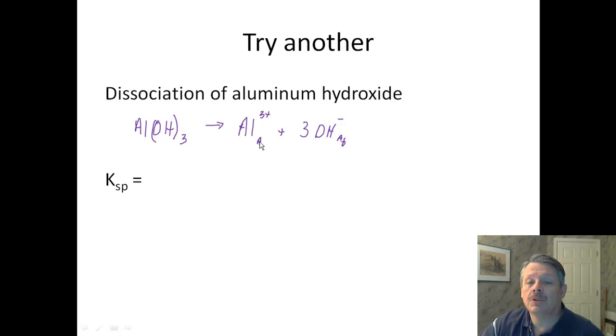These are both dissolved in water, so they are both aqueous. We don't worry about the solid when we're doing concentrations. So our solubility product constant is going to be the concentration of the aluminum ion and our OH minus ion. But that has to be cubed because there are three of them up there. And that's going to be our solubility product constant for the dissociation of aluminum hydroxide.